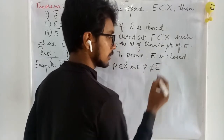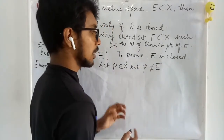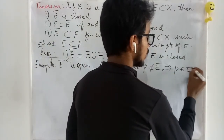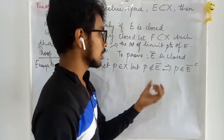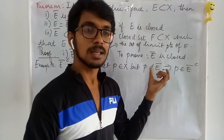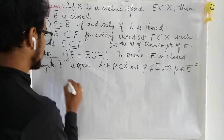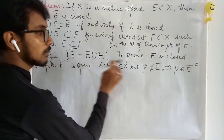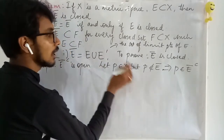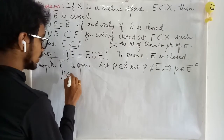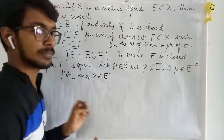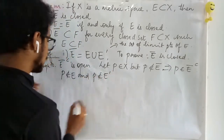If a point P is not a member of E-bar, then P is in the complement of E-bar. Since E-bar equals E union E-prime, P not being in this union means P does not belong to E and P does not belong to E-prime.